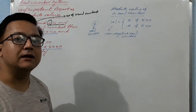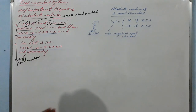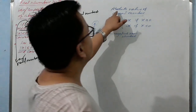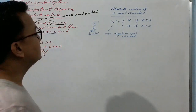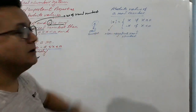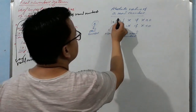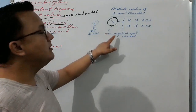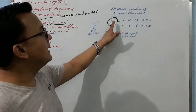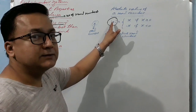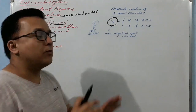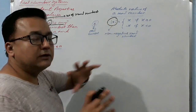Before the proof, let me define absolute value. The absolute value of a real number X is a non-negative real number. We write it as mod of X, or absolute value of X, or numerical value of X.